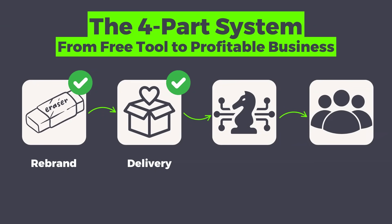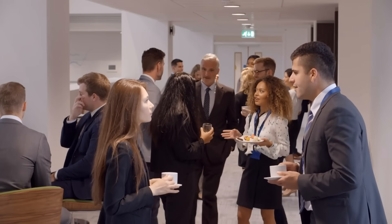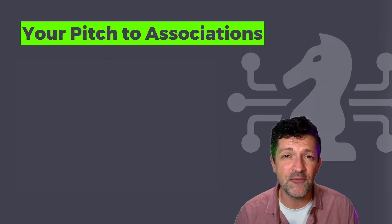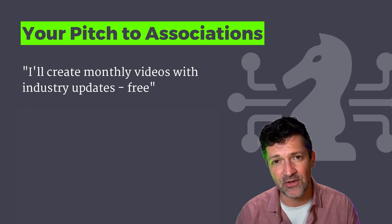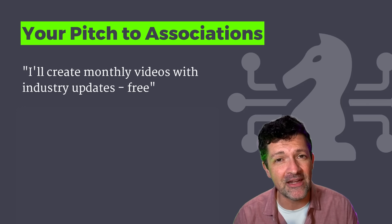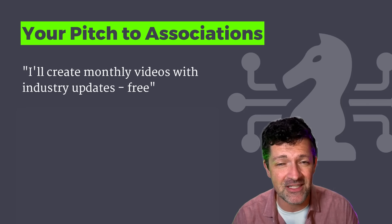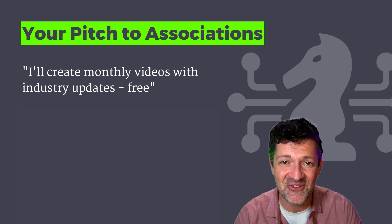Now that you know how to edit and brand these videos and how to deliver them, let's go get you some clients. I'm calling this the Trojan Horse Offer, and it centers around associations and conferences. This strategy really helped me grow my agency from just a few people to over a dozen folks and took us to the next level. It involves partnering with an association — these organizations are always looking for easy ways to engage their members. If you approach them and say 'I will create a video every single month with all the most pertinent updates to your industry and I'll do it for free,' that's an offer that's hard to refuse, and it can take you just a few minutes inside NotebookLM.